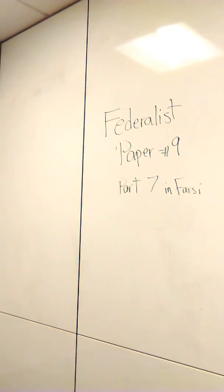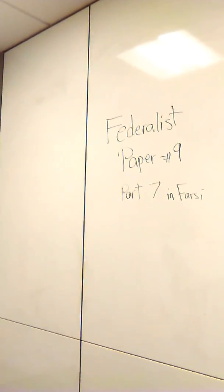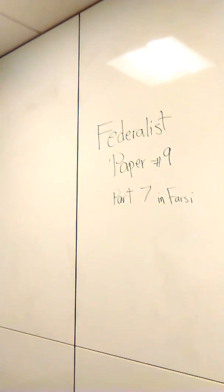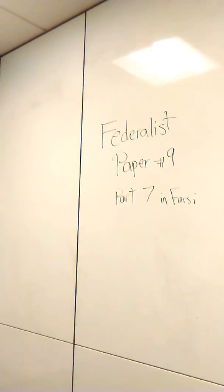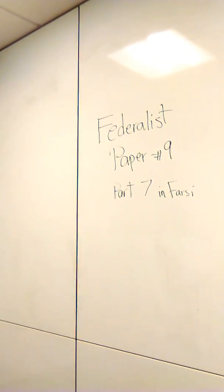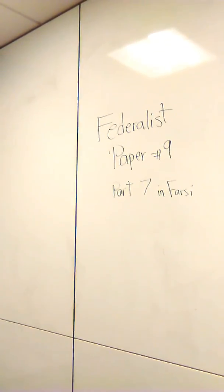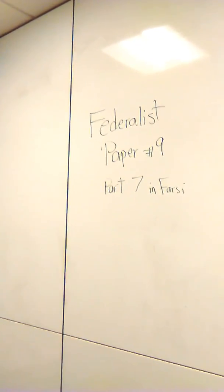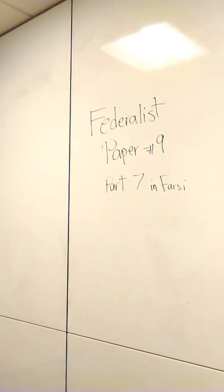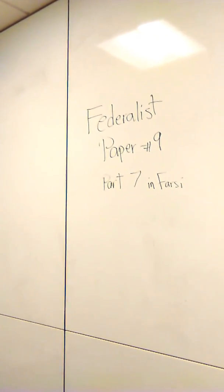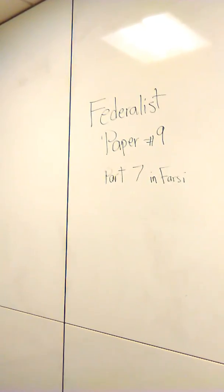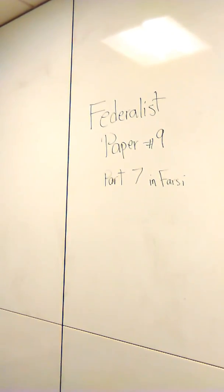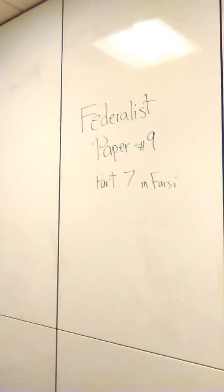میگه با دولت مرکزی شما میتونید بازی بکنید با قدرتی که بهش میدید. یعنی یه ایالت میگه ما هیچ حقی به دولت مرکزی نمیدیم، یه دولت ایالت دیگه میگه یه ذره حق میدیم. داره میگه این یه چیز هوچل مفتی میشه، اصلا به درد نمیخوره. میگه ولی بیایید نگاه بکنید، ما توی این قانون اساسی که الان به شما ارائه دادیم.